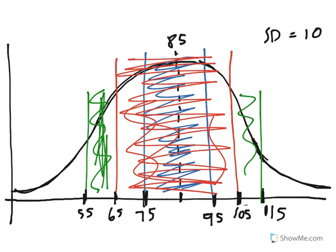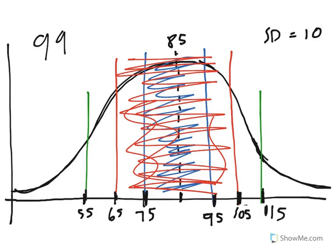What we can do is start with subtracting 99.7, subtract 95 from that, and that gives you 4.7.